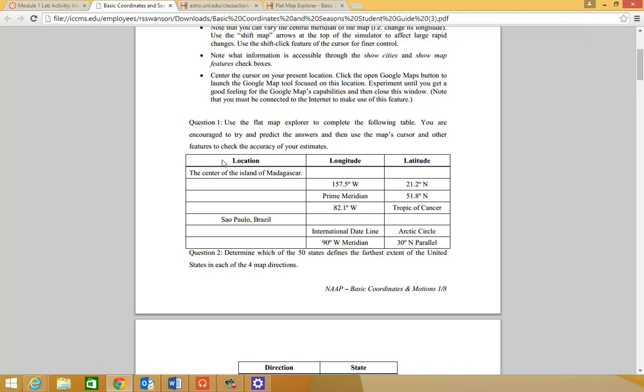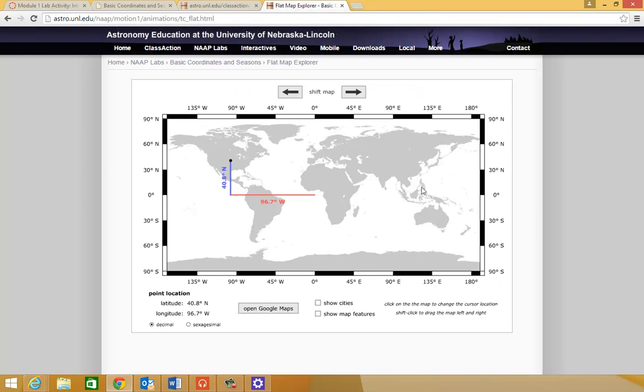For example, the first one, the center of the island of Madagascar. I go back to my Flat Map Explorer. I know where Madagascar is, off the east coast of Africa. You click on it, and it gives you two values. These are values that help you pinpoint the location of any spot on Earth. Any spot on Earth can be located if you know those two fundamental values: latitude and longitude.